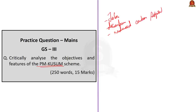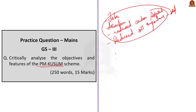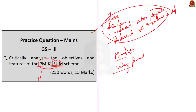If PM KUSUM is implemented successfully, it can generate thousands of jobs, reduce dependence on carbon-based power, reduce the carbon footprint of agriculture, and result in oil import savings. PM KUSUM is an important preliminary topic and also a potential main exam question given the implementation challenges discussed.